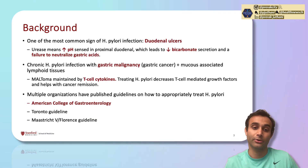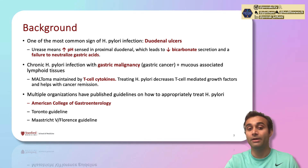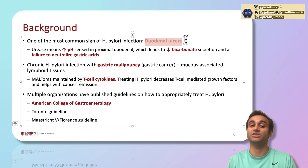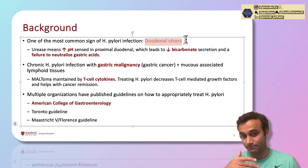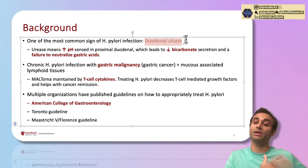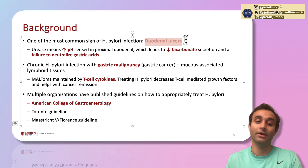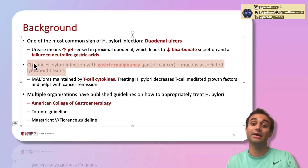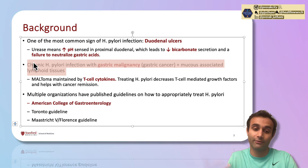Here are some high-yield tips for board exams. One of the most common signs of H. pylori infection is duodenal ulcers. The urease creates a more alkaline pH in the stomach, and when this alkaline substance enters the duodenum, it leads to less bicarbonate being secreted, making the duodenum more prone to ulcers due to increased acidity. Chronic H. pylori infection is also associated with gastric malignancy, such as gastric cancer and lymphoid cancers. This is why treating H. pylori is so important — chronic infection puts patients at very high risk for malignancy.